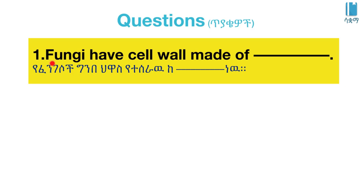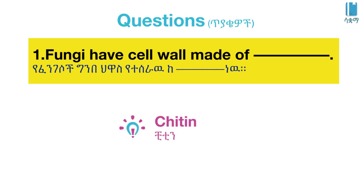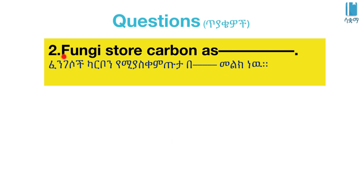Fungi have cell walls made of chitin. Fungi store carbon as glycogen.